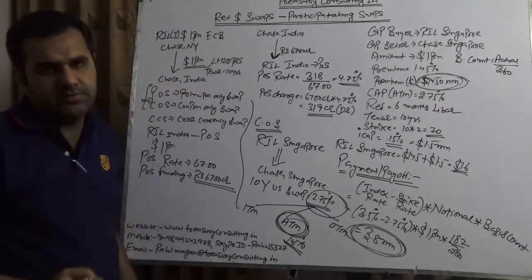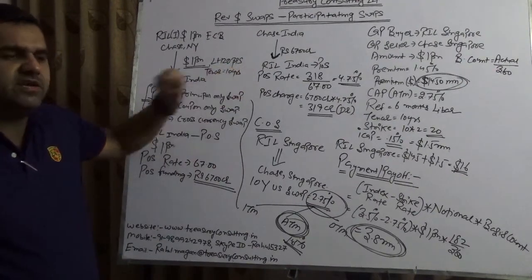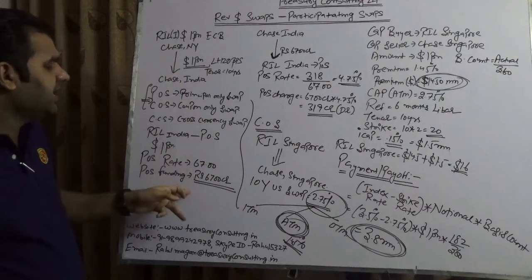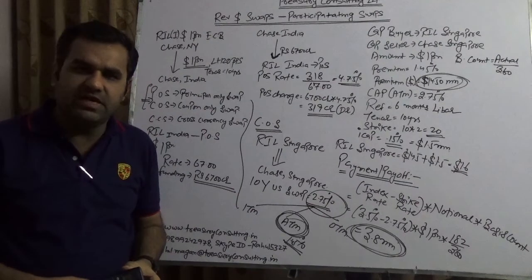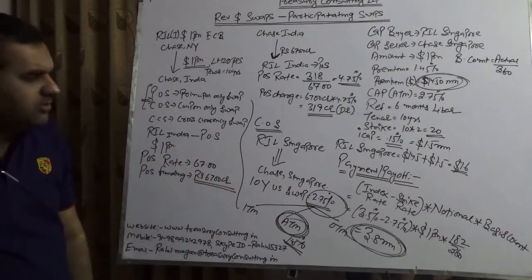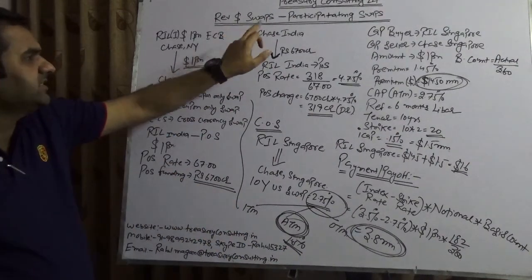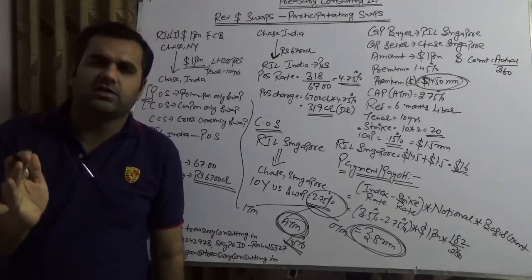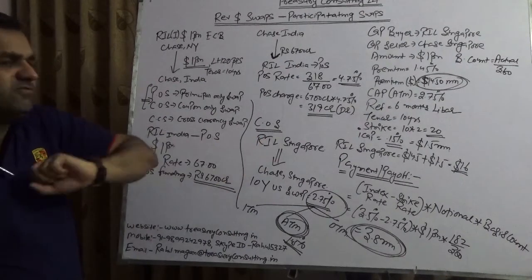This is a classic case. We went unconventionally and kept the total cost floating in our P&L. We converted the principal liability using principal only swap, and we converted the floating liability using our offshore entity Reliance Singapore — because the Reserve Bank of India will never allow you to do such a transaction onshore. Once you consolidate, things would automatically be the same. Reliance Singapore does the cap with Chase Singapore. This is what we call reverse dollar participatory swaps — which not only protect FX risk, but also convert the floating liability into a fixed liability using a cap.